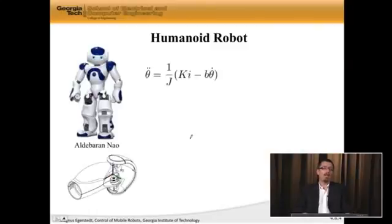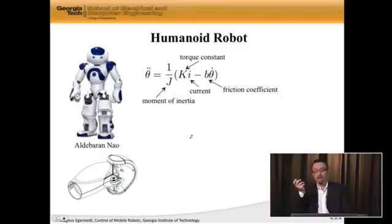And luckily for us, we actually have detailed models of these joint angles. In fact, for a given joint, the angular acceleration is 1 over J times ki minus b theta dot. And these things are physical things. So J is the moment of inertia. I is our input. So i is actually equal to u here in this case. This is our input to the system. This is the current we're applying at the motor. k is a torque constant and translates roughly currents into accelerations. And then there is always a friction coefficient, a viscous friction coefficient in these motors.